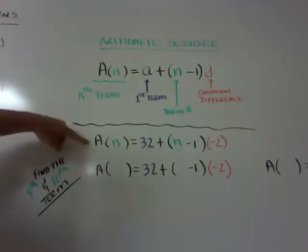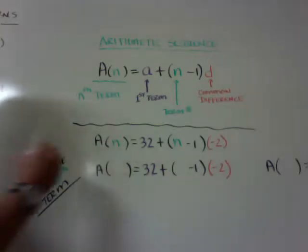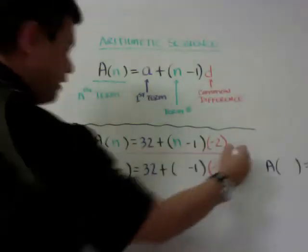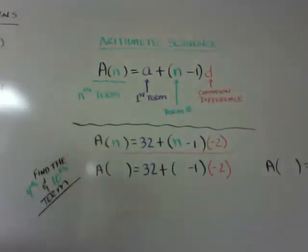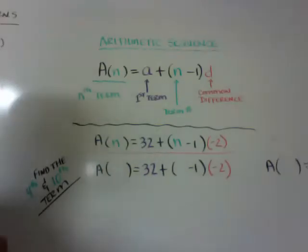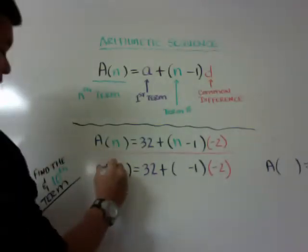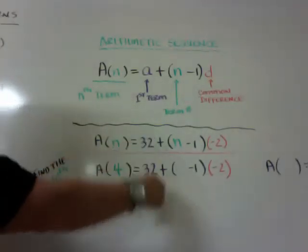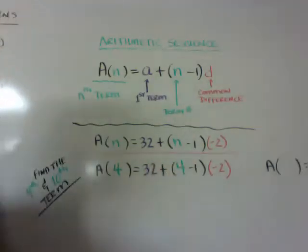So here's my example. Here's my arithmetic sequence. I'll underline it for you guys. That's my arithmetic sequence. The book will say, find the fourth and tenth term. So you've got to do it twice. So in this case, I would, in the fourth term, I would put A(4) is equal to, and everything dropped down, but instead of n, I put 4 here.